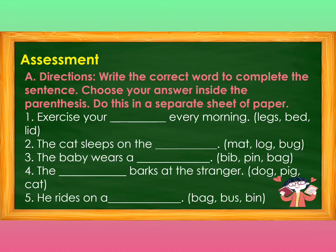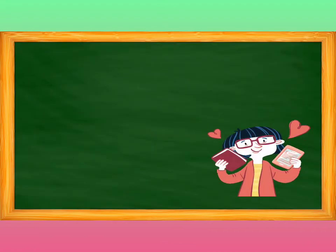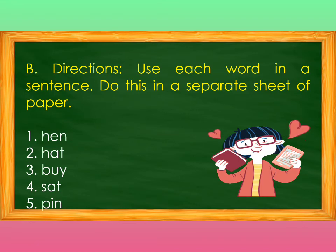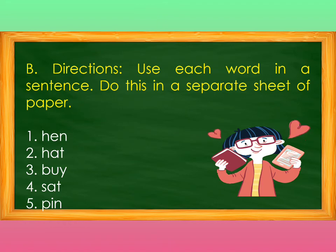Spectacular! You're doing well! How about this one? Use each word in a sentence. Do this on a separate sheet of paper. Number 1: hen — use the word hen in the sentence. Number 2: hat — use the word hat in the sentence. Number 3: buy — use the word by in the sentence. Number 4: sat — use the word sat in the sentence. Number 5: been — use the word been in the sentence. Amazing! You really amazed me that much. Well done!